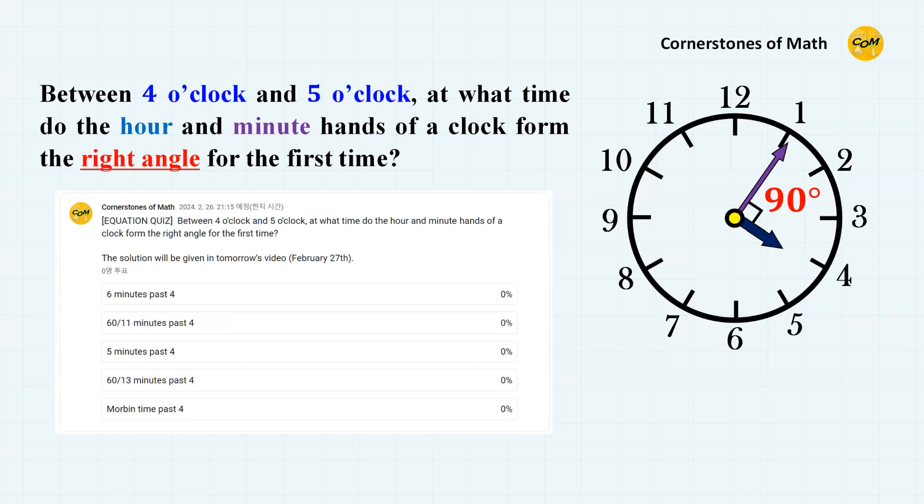The question was, between 4 o'clock and 5 o'clock, at what time do the hour and minute hands of a clock form the right angle for the first time?